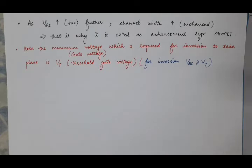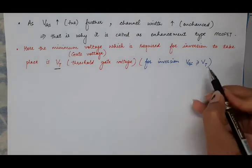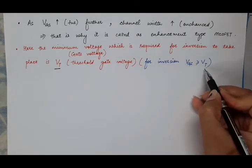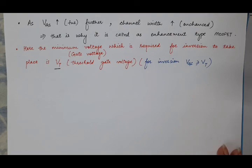One more important concept is threshold gate voltage. We will require some minimum voltage at the gate for inversion to take place. When the voltage at the gate is greater than or equal to this threshold gate voltage, at that time inversion will take place — or you can say that the channel between source and drain will start forming. This is all about the construction of enhancement type MOSFET and how the channel is formed between source and drain.